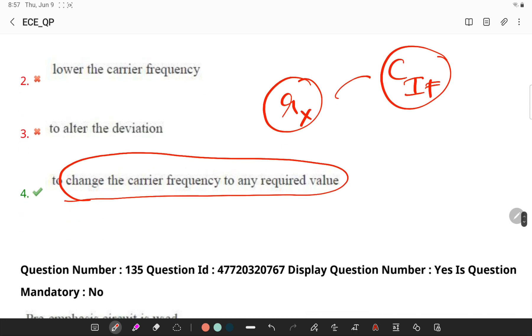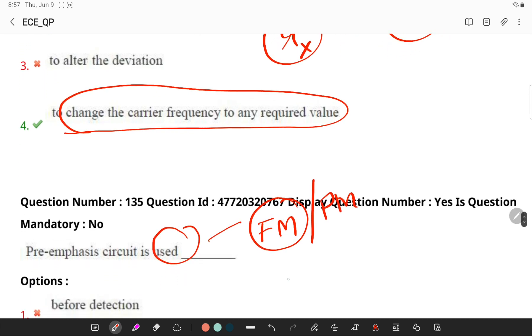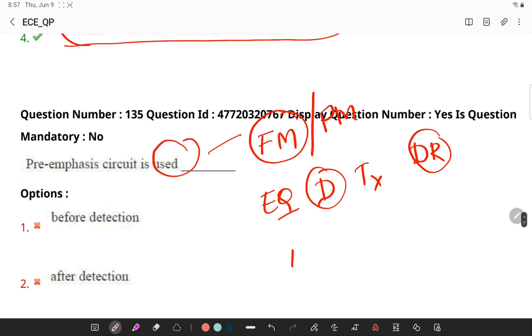Now let's go to the next question. Pre-emphasis circuit is used. So pre-emphasis circuit is used in frequency modulation or phase modulation transmitters to equalize the driving power of a transmitting signal in terms of deviation ratio.